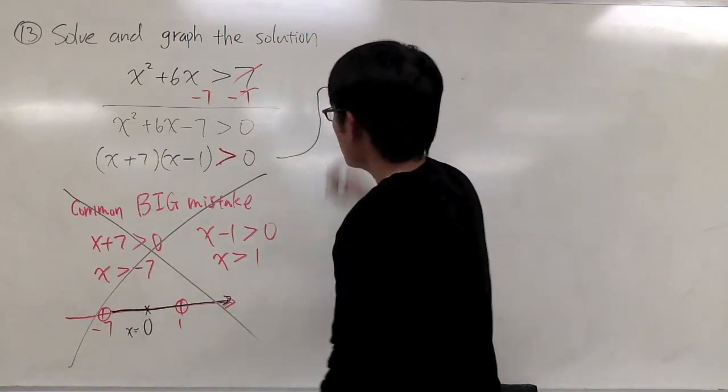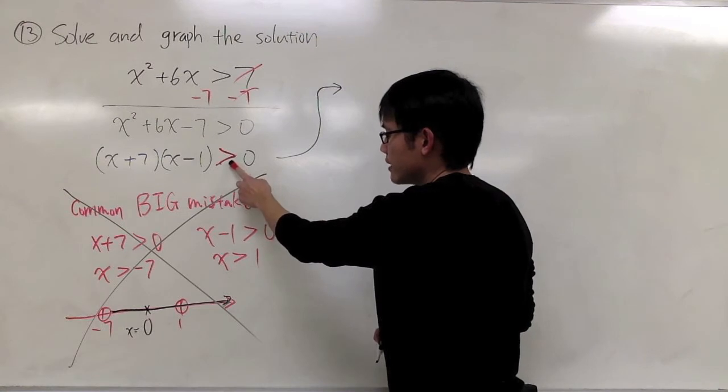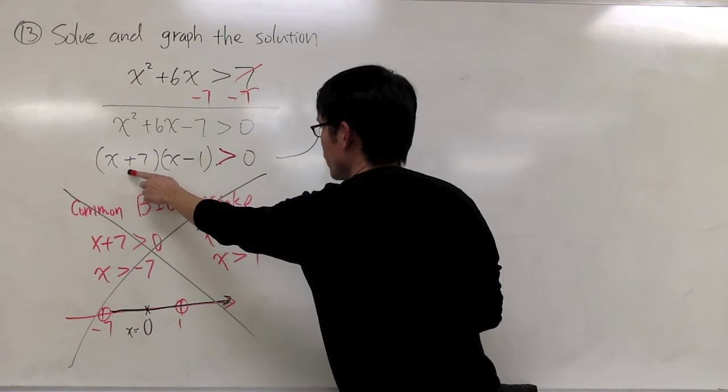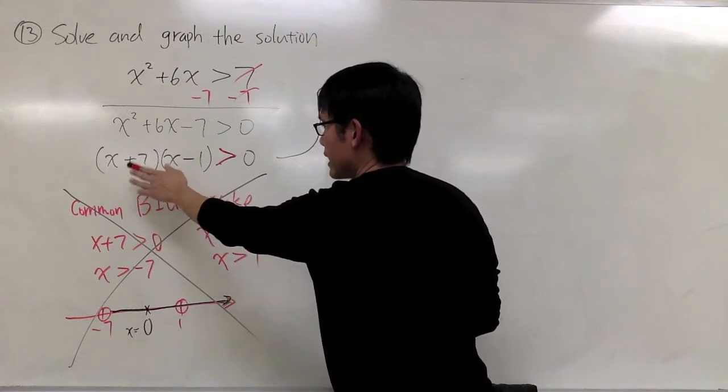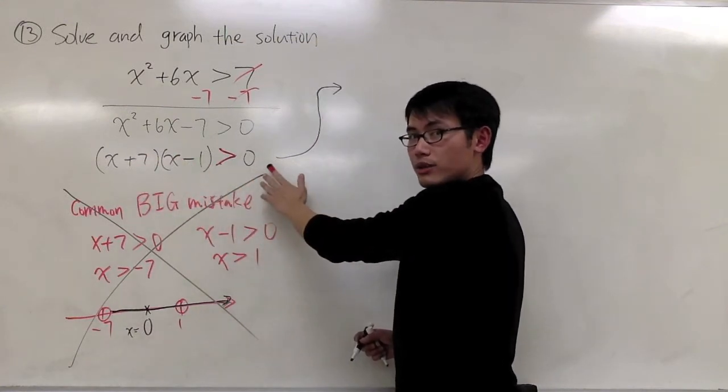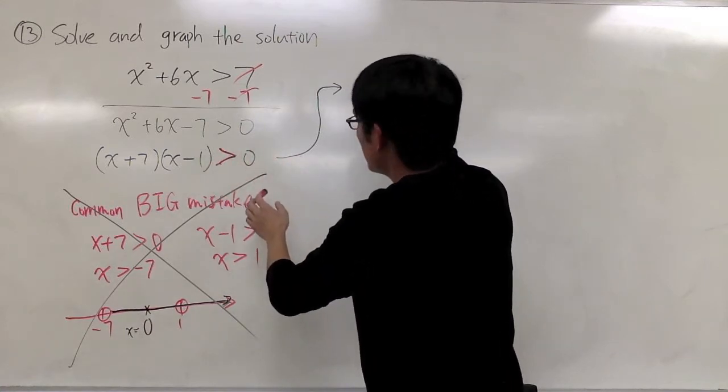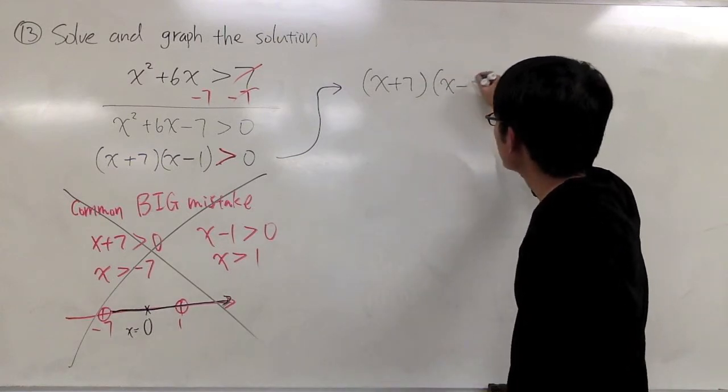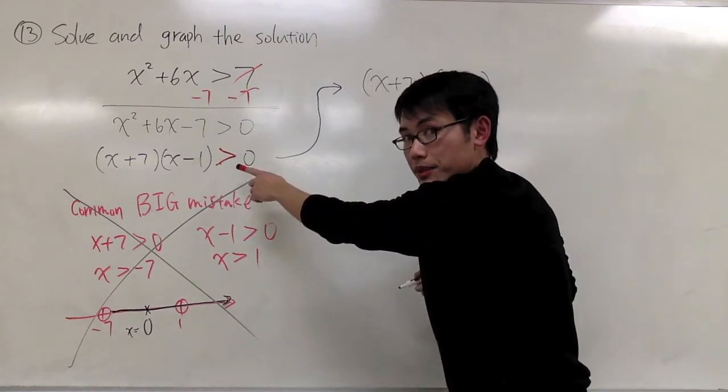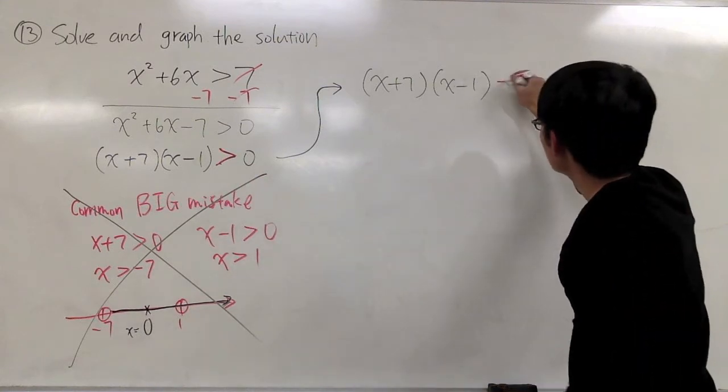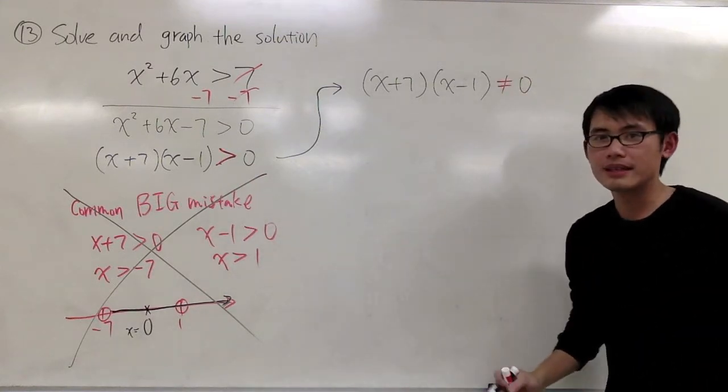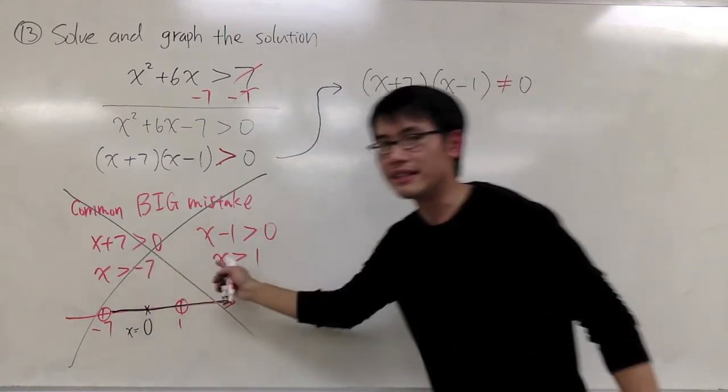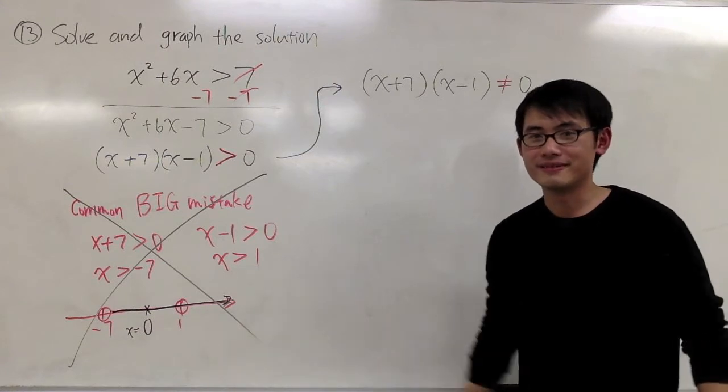Well, I would like to do this. We just mentioned when you have greater than, you don't want to include those numbers. When I have x plus 7 times x minus 1 greater than 0, that implies when you multiply x plus 7 times x minus 1, you don't want it to be 0. So I can change that to not equal to 0. The reason I make this change is because I don't want to worry about the inequality sign right there.